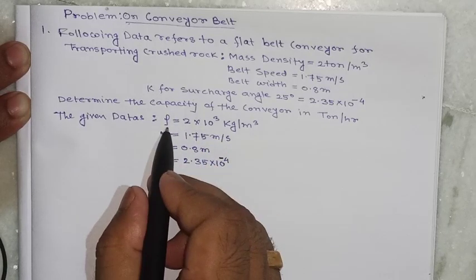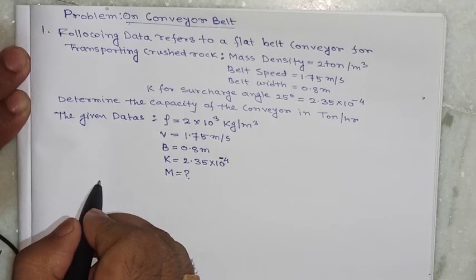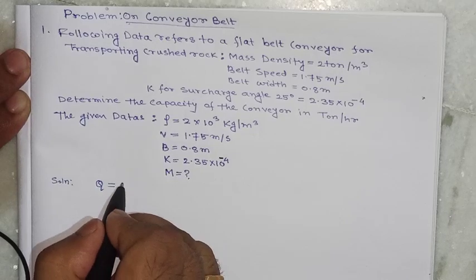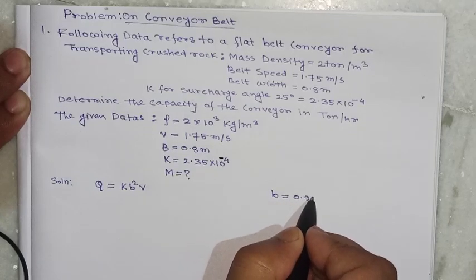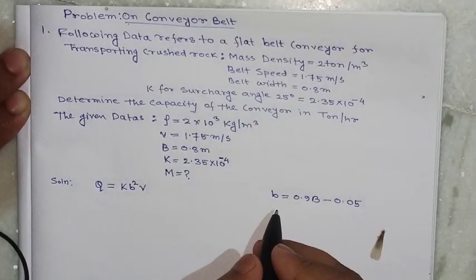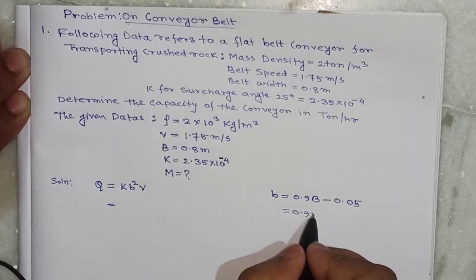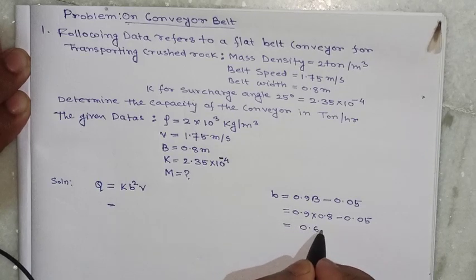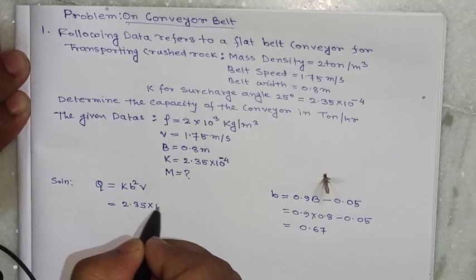We have to determine the mass capacity of the conveyor. Since density is given, we find mass capacity capital M. We know the volume capacity Q equals k times b squared times v, where the effective belt width small b equals 0.9 times (B minus 0.05). So b equals 0.9 times (0.8 minus 0.05), which gives b equals 0.67 meter. Now putting in the value of k: 2.35 into 10 to the power minus 4.